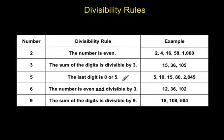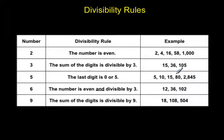The next one is one of my favorites — it's really easy. Divisibility by 5: all you have to do is look at the last digit. If it's a 0 or a 5, it's divisible by 5. 5 is a factor of 5, 10, 15. Even 80 — it ends with a 0, so 5 is a factor of 80. What about 2,845? It ends with a 5. That's all you need to know. If it ends with a 5 or a 0, it is divisible by 5.